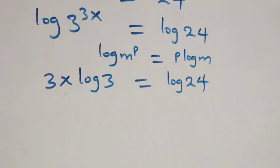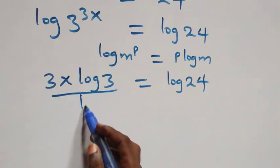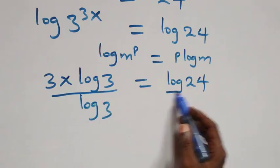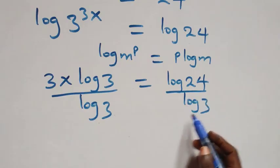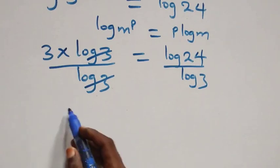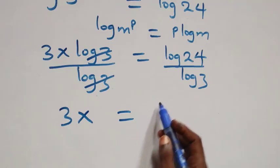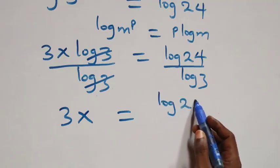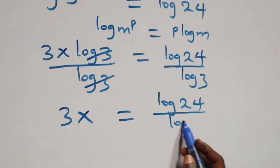Then the next step: divide both sides by log 3 — divide this side by log 3, also divide this side by log 3. Here log 3 cancels each other, and we have 3x left, which is equal to log 24 over log 3.